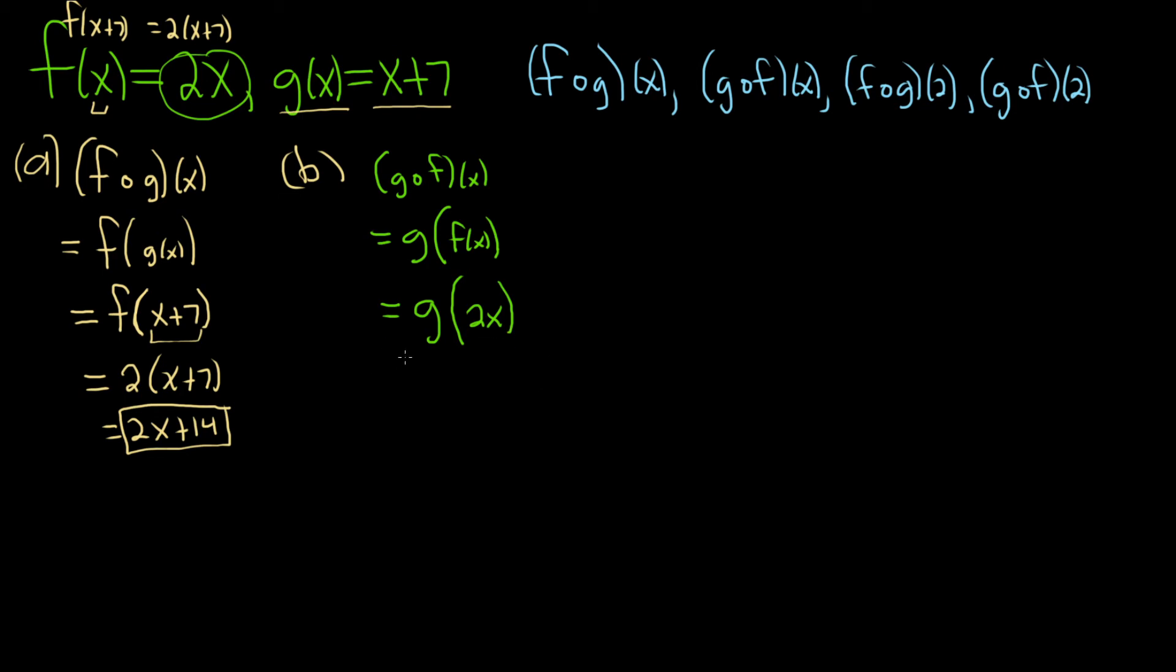And then now you look at g, because it's g of 2x. Well, g of x is x plus 7. So if you were just to replace x with 2x, you would just get 2x plus 7. So this is just 2x plus 7. And that would be the answer for g of f of x.